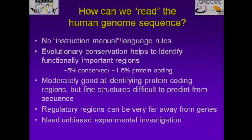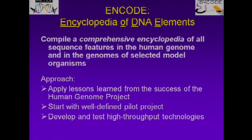We knew that regulatory regions can be very far away from genes, and so we felt we needed an unbiased experimental investigation to really grapple with this challenge. And so we started this project called ENCODE, or Encyclopedia of DNA Elements. The goal of this project is to compile a comprehensive encyclopedia of all the sequence features in the human genome and in the genomes of selected model organisms. As Eric pointed out, we felt the use of model organisms is very important in being able to understand biology and the human genome sequence.